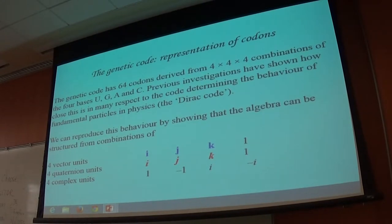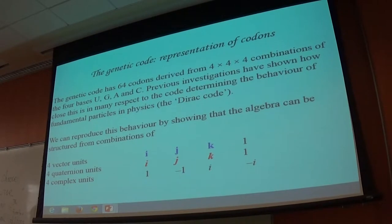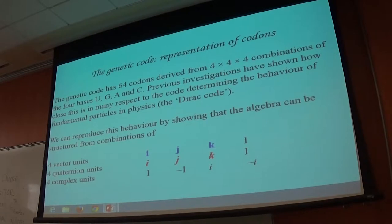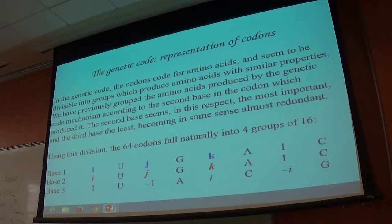What we're going to do is say: we've got four vector units, four quaternion units, and four complex number units — the three algebras that can collectively create this structure. And if we multiply four by four by four, we'll get 64.